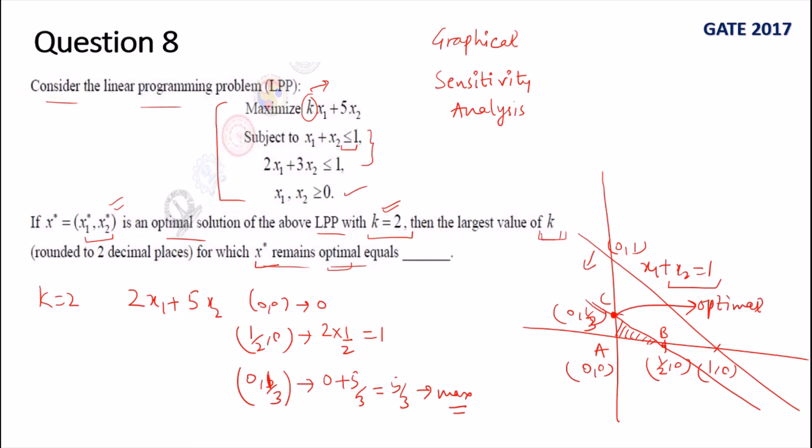Now they are asking up to what value of k will this remain the optimal solution. You can see this point is (0, 1/3). At (0, 1/3), what is the value of x1? It's always 0. So x1's value is 0, meaning if you take any value of k, for this particular point k can be anything, this objective function will remain 5/3 because x1 is 0, so you multiply it by any factor, its contribution won't come. That means whatever k is, at this point the value remains 5/3.